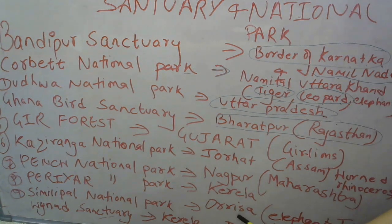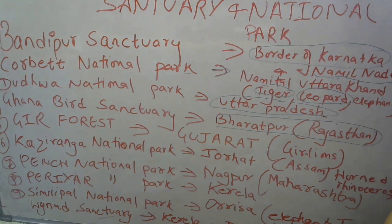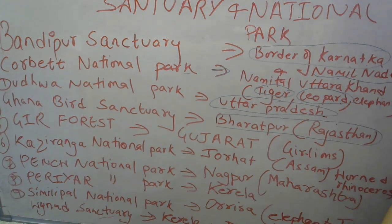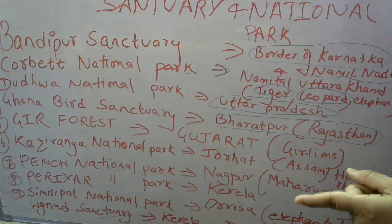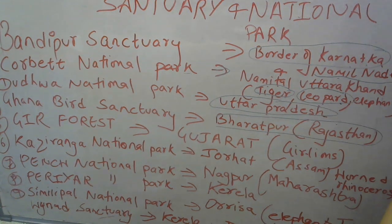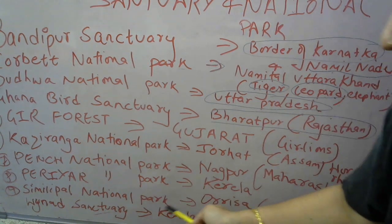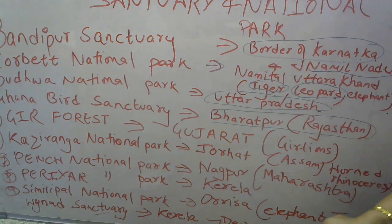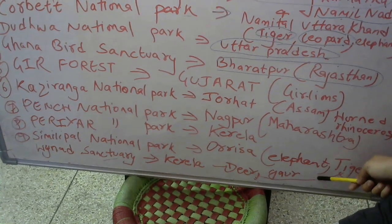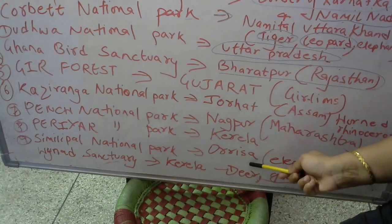Simlipal National Park is based in Odisha. It is famous for Elephants and Tigers. Simlipal National Park is located in Odisha and is known for Elephants and Tigers. So: Kaziranga, Pench, Periyar, and Simlipal are four very important national parks asked by examiners. Ghana Bird Sanctuary is in Bharatpur, Rajasthan. Simlipal National Park is in Odisha, famous for Elephant and Tiger.